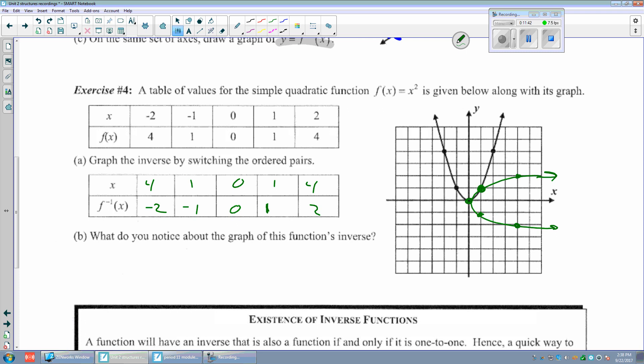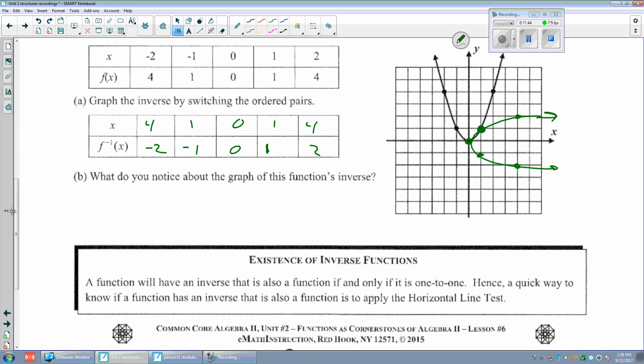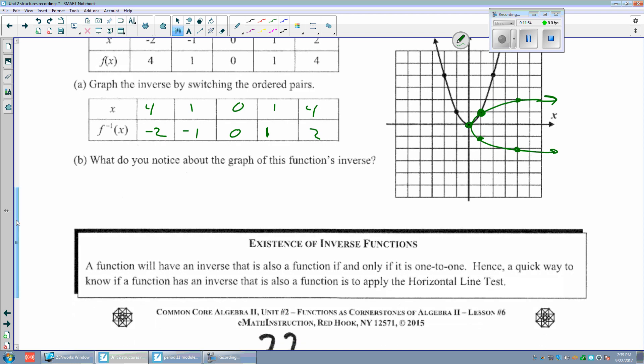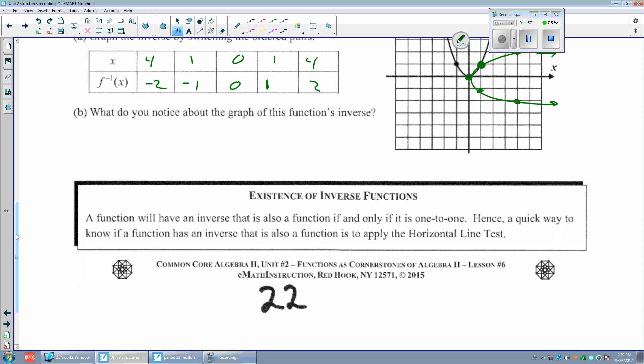What do you notice about the graph and its inverse? Well, for one thing, it looks like it rotated 90 degrees to the right. Existence of inverse functions: If the graph isn't one-to-one, then the inverse isn't a function. A function will have an inverse that's also a function if and only if it's one-to-one. Hence, a quick way to know if a function has an inverse that is also a function is to apply the horizontal line test. This has been a long day - good night, see you in class.